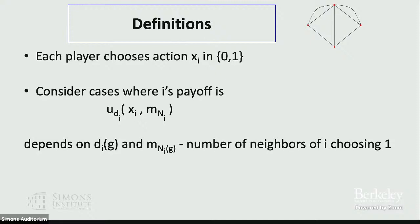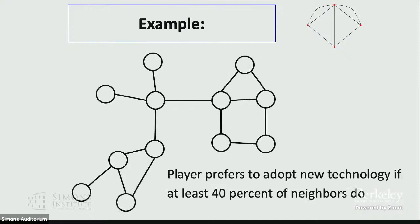Let's start with a simple example. Take some graph — each node is a person making a choice to adopt a new technology or not. Suppose the payoffs are such that a person prefers to adopt if at least 40% of their friends do. So it's a relatively good technology; they don't need half their friends, just 40%. One equilibrium: these three people adopt and nobody else does — each one has at least 40% of their friends adopting, and the others have fewer than 40%, so that's stable.